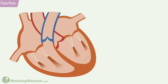What happens is that during systole, along with the entire ventricular musculature, the papillary muscles also contract. This maintains pull on the cusps of the valves, so they don't bulge back into the atria. And thus the regurgitation of blood is prevented.